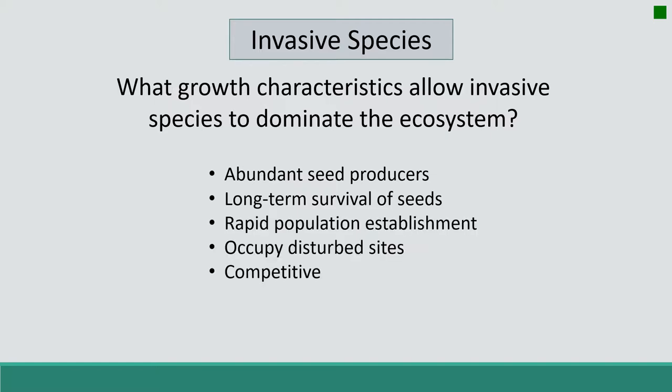Invasive species have rapid population establishment. They're often pioneer species after disturbance, meaning they are first to occupy a disturbed site, which gives them a competitive advantage. Cheatgrass, a winter annual, can use resources more quickly in the spring than our native species, making it more competitive.